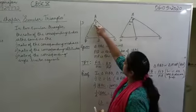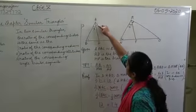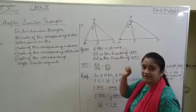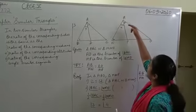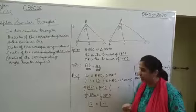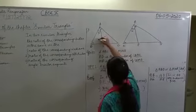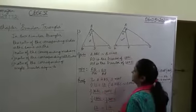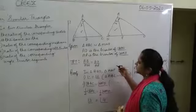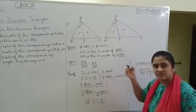The corresponding angle bisectors: since angle A corresponds to angle M, the bisector segment AD corresponds to the bisector segment MP. This is what we have to prove. For this, we could take up these two triangles, show that they are similar to each other, and get this result.